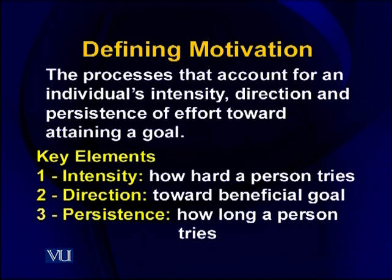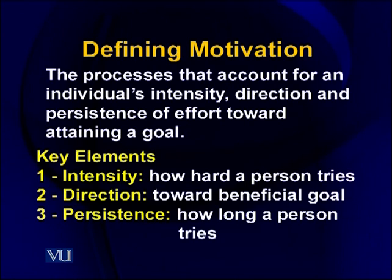The harder a person works, the more motivation is present. Direction means your effort must be directed toward certain goals. You can use this aspect of motivation for organizational benefit — you want to make sure all your employees are working toward specific goals. The last part is persistence: how long a person keeps trying. So intensity, direction, and persistence are the three basic elements that Robbins describes as key to motivation.